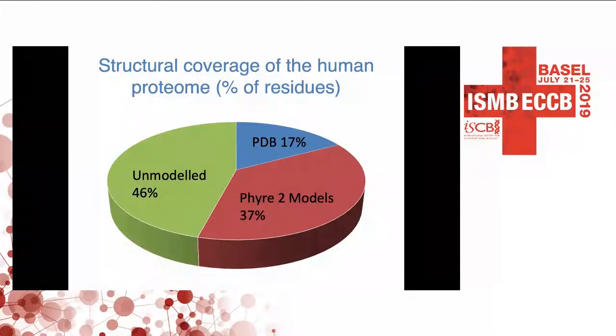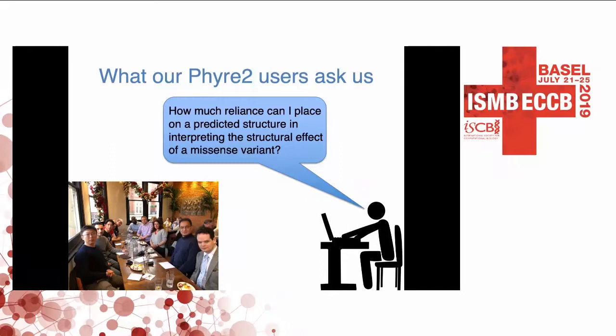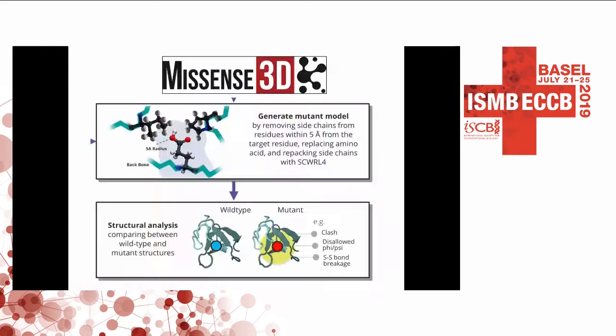PDB structures only cover about 17% of the human proteome. Using FIRE, we can cover another 37% of the human proteome through FIRE-predicted models. Our users are often very interested to understand how reliable it is to use a structural model to interpret the effect of a missense variant, and within MissSense 3D this has been assessed. Imagine we've zoomed into a particular region of the protein — we have a glutamate that is going to change to a phenylalanine.